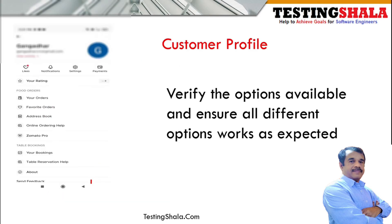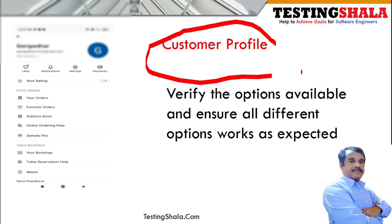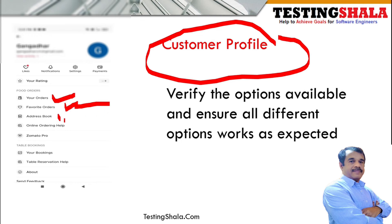There is also a customer profile screen, which is created when you log in or register. In the customer profile, we should be able to see all orders placed so far, including past orders. We can also select orders marked as favorites, which should list all related orders, and there is an address book where all addresses are stored.